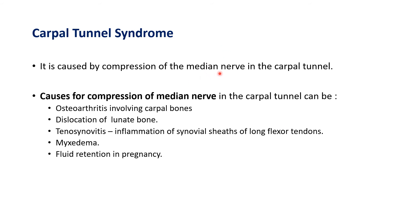The median nerve along with nine tendons passes through the restricted space of the carpal tunnel. If there is any involvement of the soft tissue — accumulation of fluid or swelling within the carpal tunnel — it will lead to compression of the median nerve, and the signs and symptoms following this compression are called carpal tunnel syndrome. Causes for compression include osteoarthritis involving carpal bones, dislocation of the lunate bone (the most commonly dislocated carpal bone), tenosynovitis (inflammation of synovial sheaths of long flexor tendons), myxedema, and fluid retention in pregnancy.